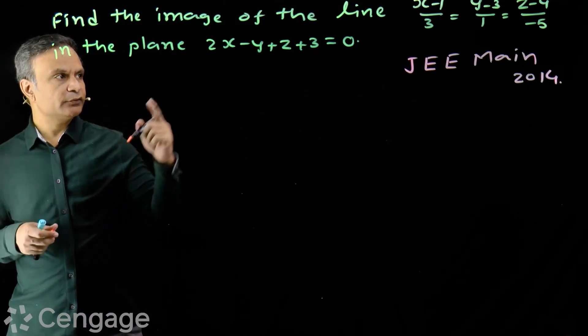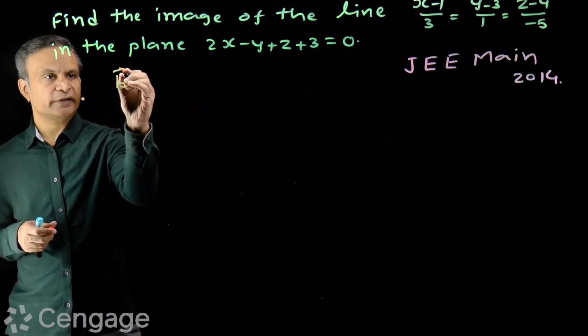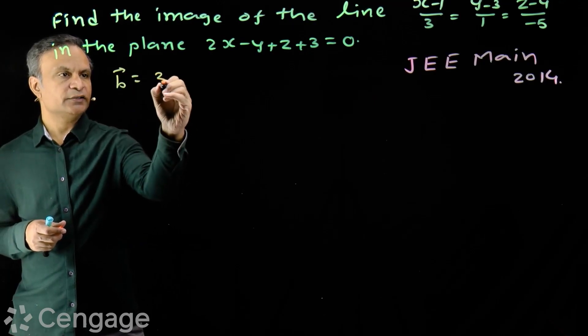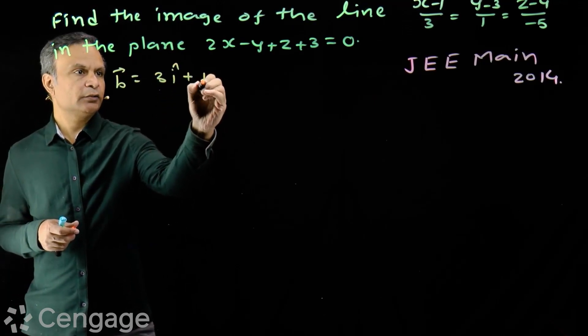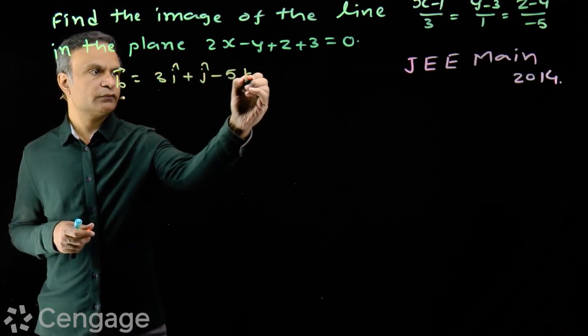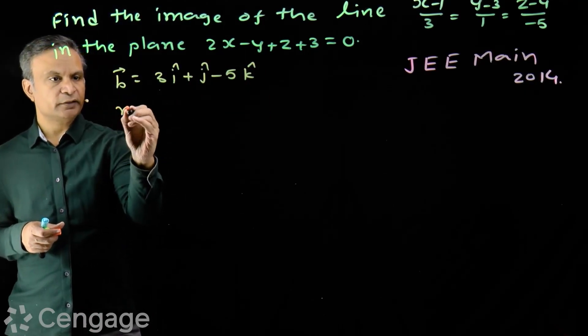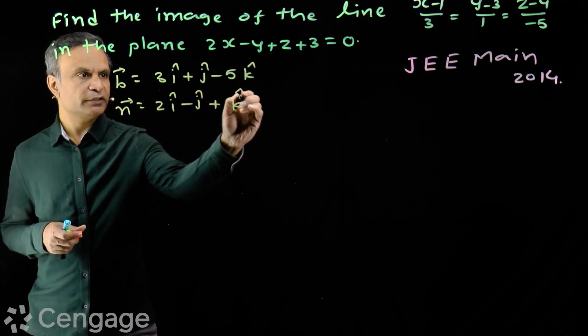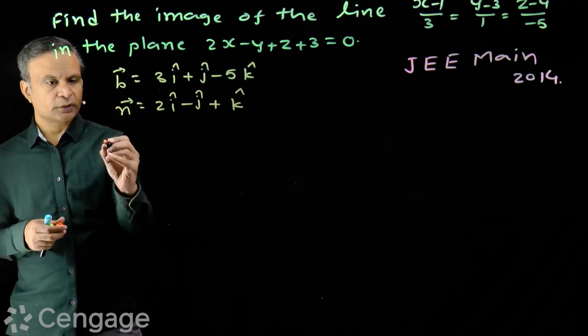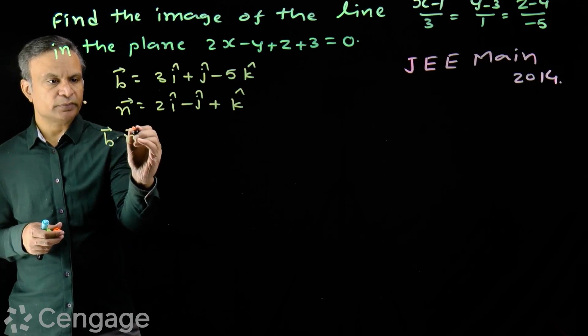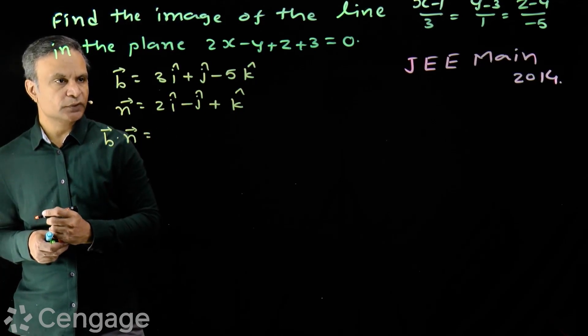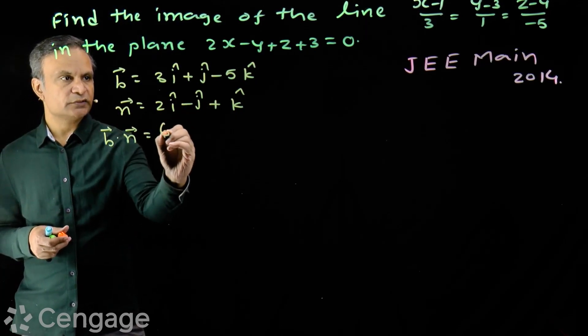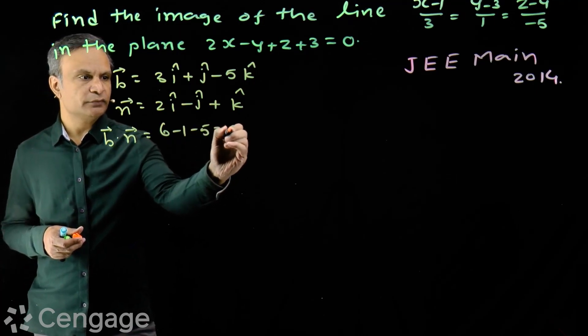Direction ratios of line are 3, 1 and minus 5. So vector along line is 3i plus j minus 5k. And vector normal to the plane is 2i minus j plus k. Now, b dot n is 6 minus 1 minus 5. This is 0.